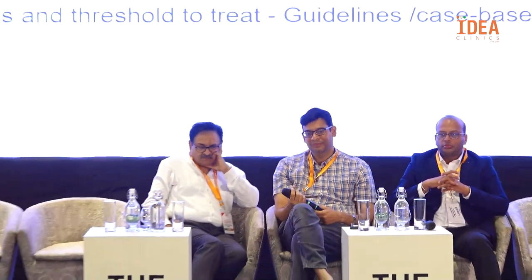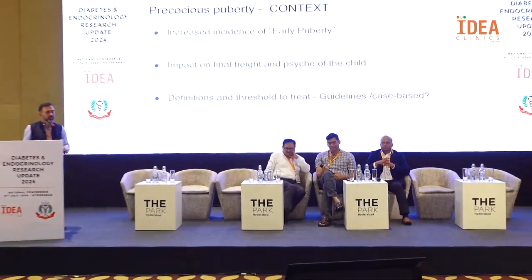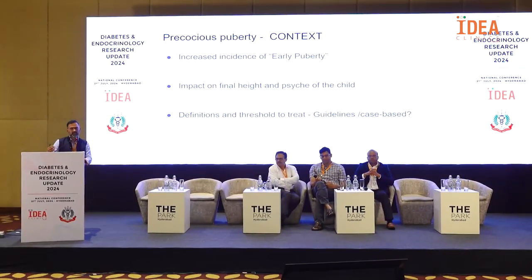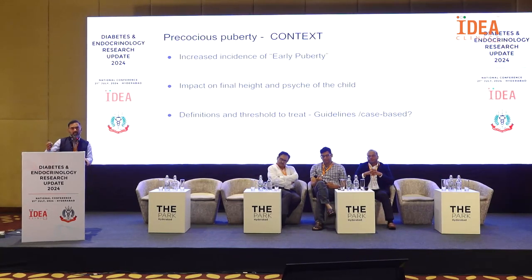Next topic is precocious puberty. We are seeing many girls having early puberty — the definitions and age cut-offs are changing. This is important because early puberty may affect the child's final height and psychological wellbeing. You don't want an eight or nine year old girl to have periods, even though it may now be considered physiologically normal. What are the definitions, when do we treat, and what are the guidelines?